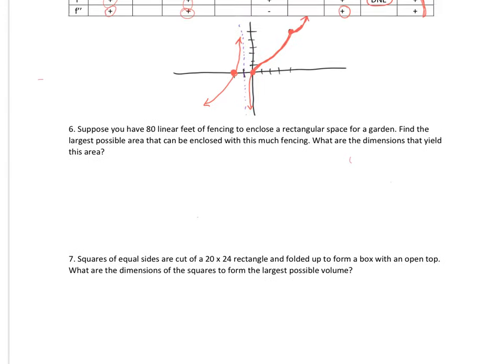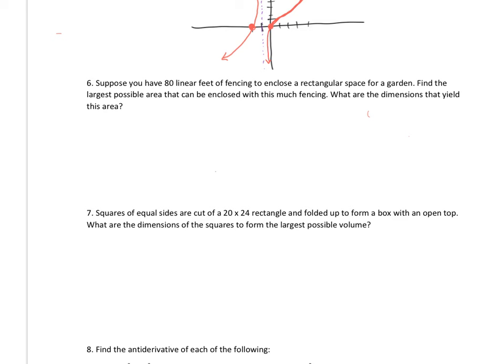Over here we have number 6. Suppose you have 80 feet of linear fencing to enclose a rectangular space for a garden. Find the largest possible area that can be enclosed. This is a basic optimization problem. I've got a rectangular area, the perimeter is 80. Since all sides are enclosed and I'm using every side, we're going to end up with a square. The area is length times width, and the perimeter is twice the length plus twice the width equals 80. To take the derivative of the area, I have two variables, so I want to simplify this down to a one-variable equation.